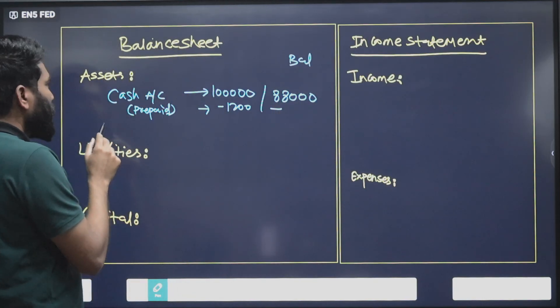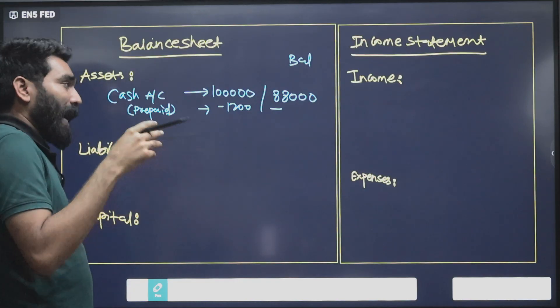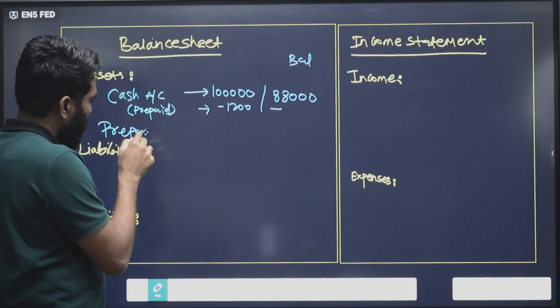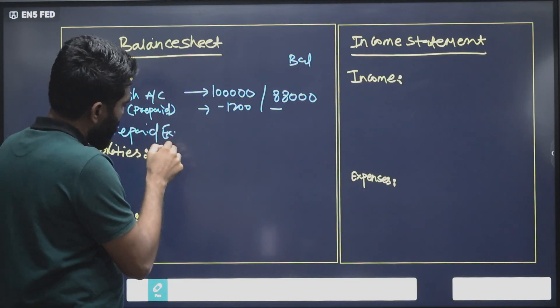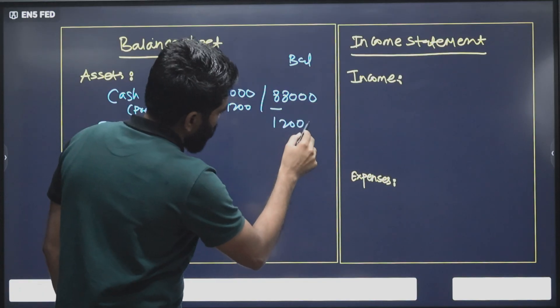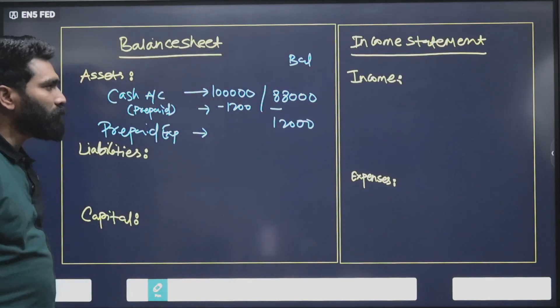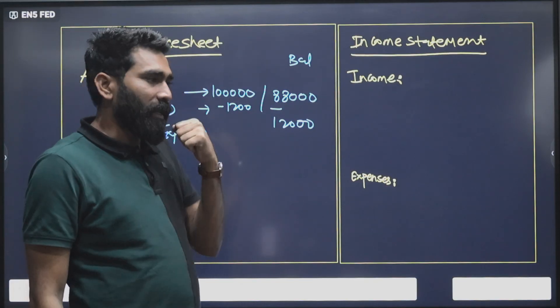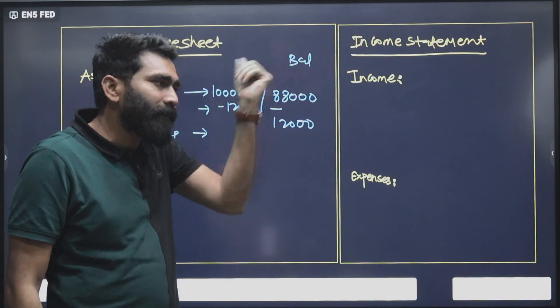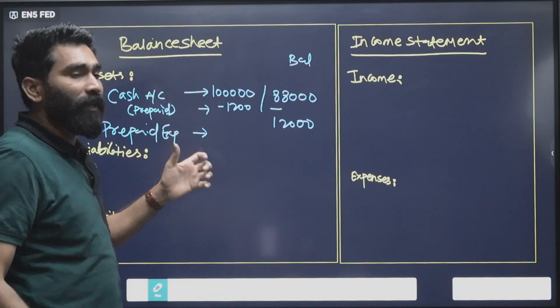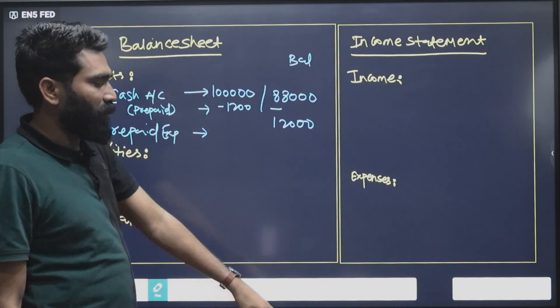And the prepaid expense, which is $12,000. So when the fund actually pays the amount in advance for the next accounting period, this is how we record the transaction.